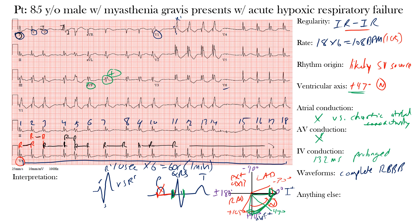You may have also noticed discordance between QRS complexes and T waves, along with ST-T wave abnormalities, which are likely secondary to the right bundle branch block. In lead V1, the QRS is mostly positive and the T wave goes in the opposite direction. The same in V2 — upright QRS with ST depression and inverted T waves. This is called discordance. Normally the QRS complex and T wave should go in the same direction, and here the abnormalities are secondary to the abnormal repolarization from the bundle branch block.